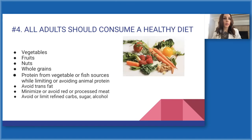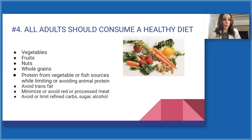Going back to the guidelines — number four: all adults should consume a healthy diet. A list of healthy foods includes vegetables, fruits, nuts, whole grains, protein from vegetable or fish sources. Guidelines recommend avoiding trans fats, minimizing or avoiding red or processed meats, and avoiding or limiting refined carbs, sugar, and alcohol.